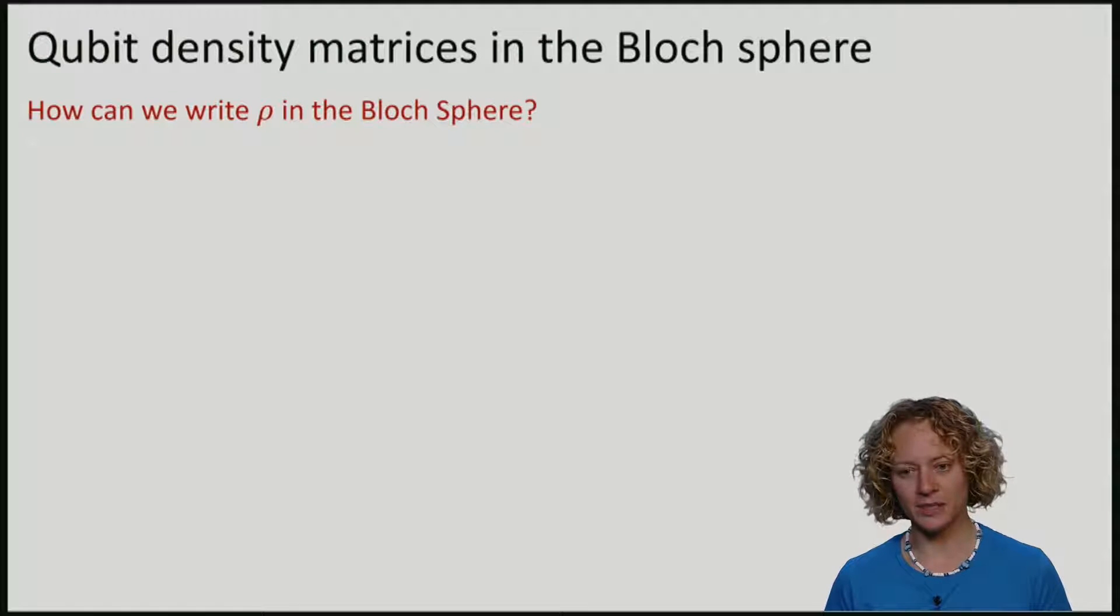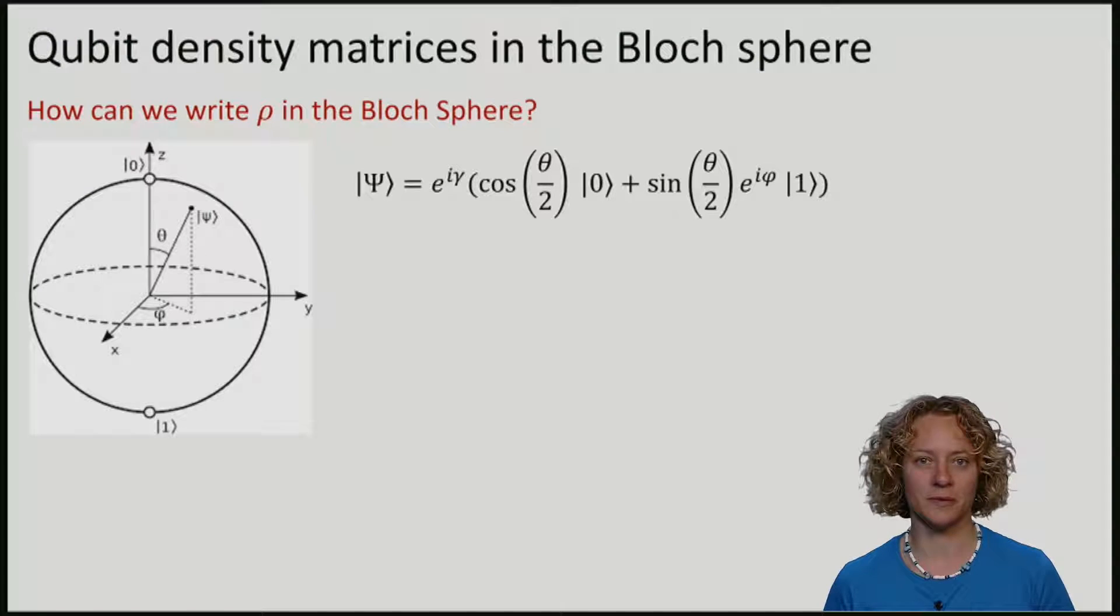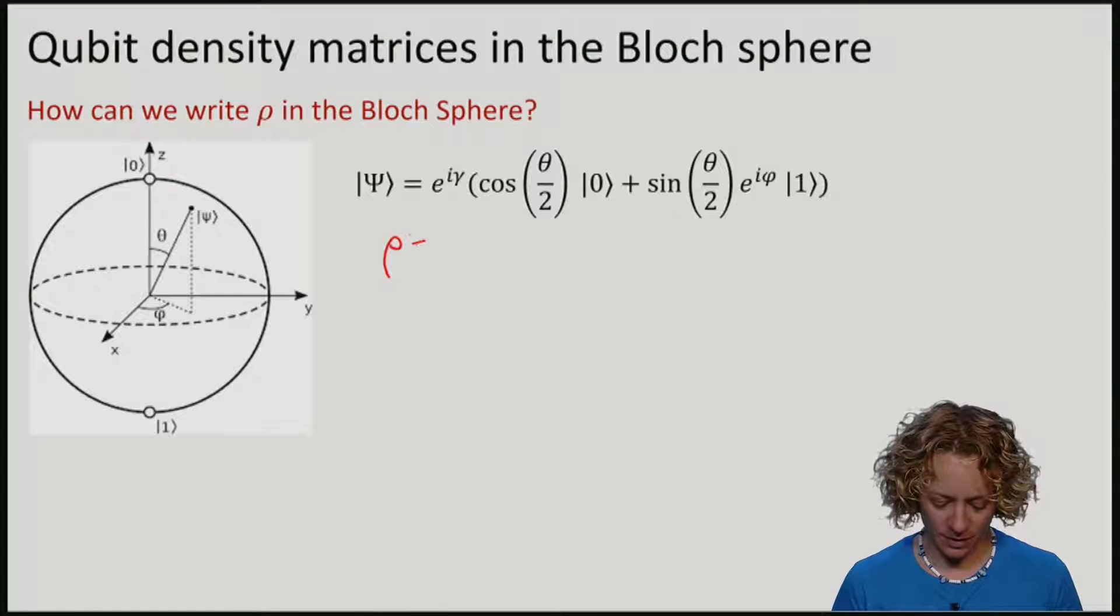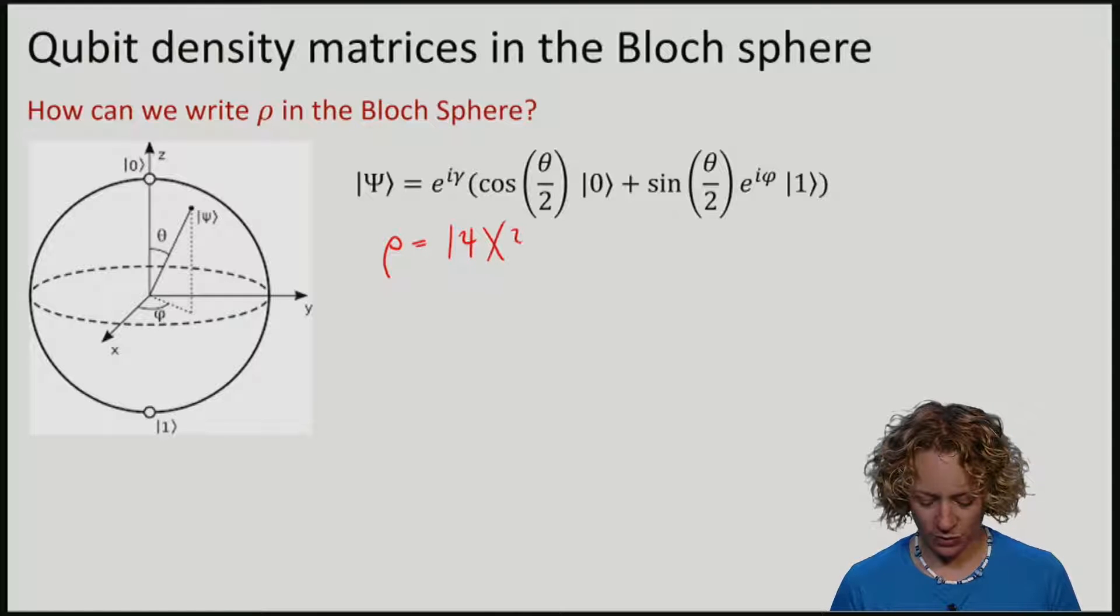Let me remind you, here is the Bloch sphere and here is my qubit. So rho is the density matrix of my qubit.